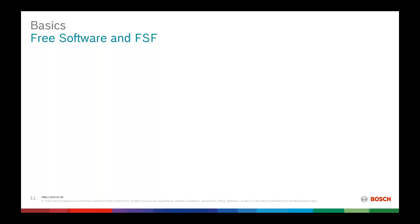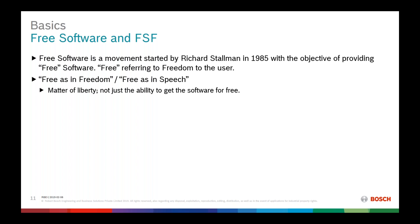Free software is a movement started by Richard Stallman in 1985. The main objective was to provide users freedom in using software. The term is 'free as in freedom' or 'free as in speech,' versus 'free as in beer.' When we talk about freedom in software, it is a matter of liberty — like when we say freedom of speech — not just the ability to get the software for free.